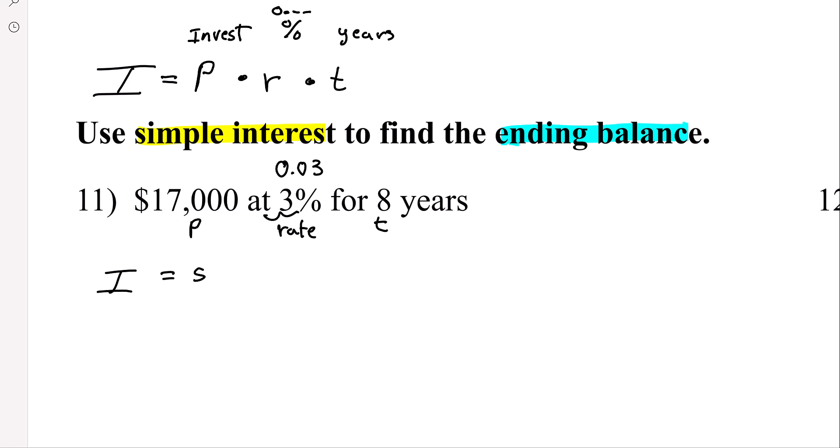So we're going to write $17,000. That means times 0.03. In this case, this means multiply, 8 years.